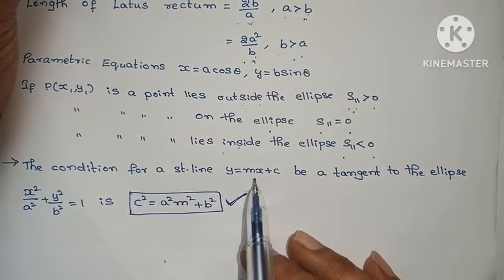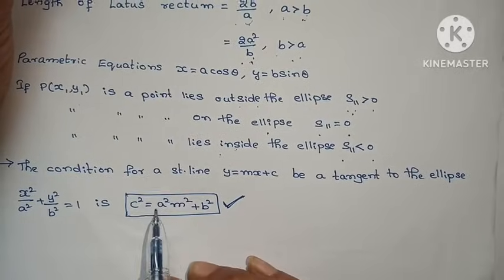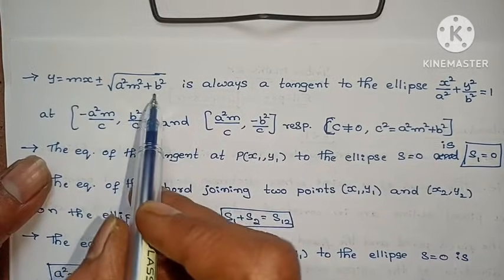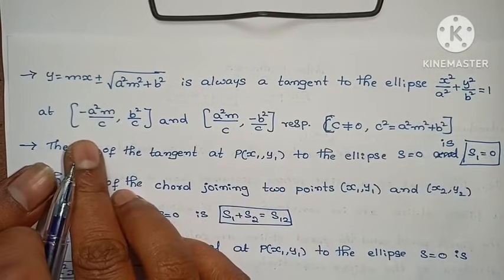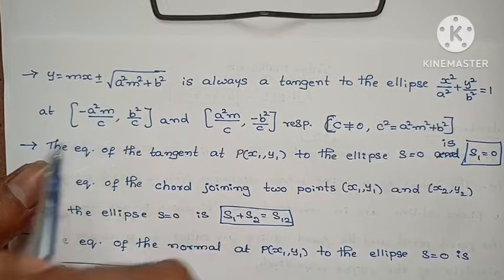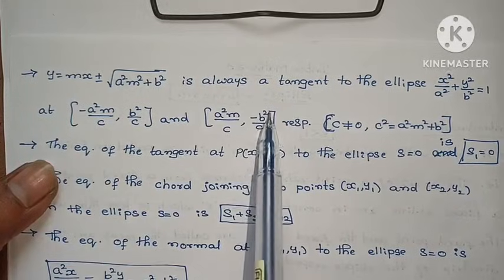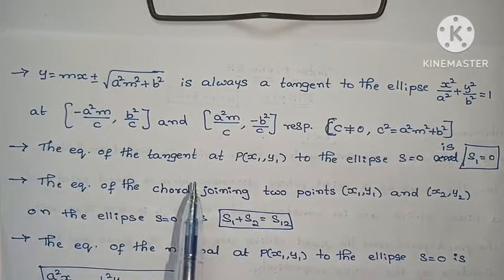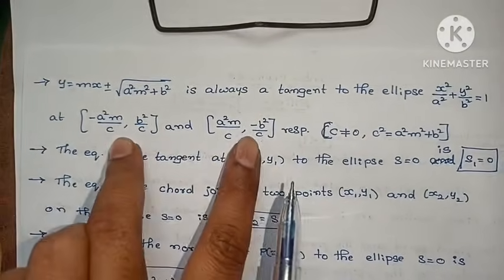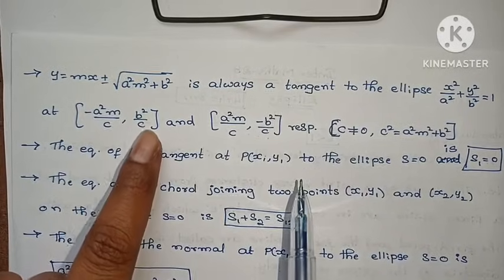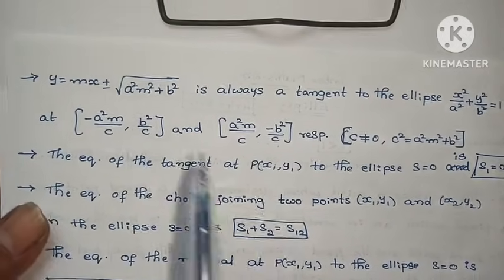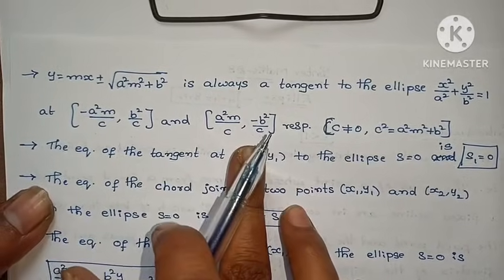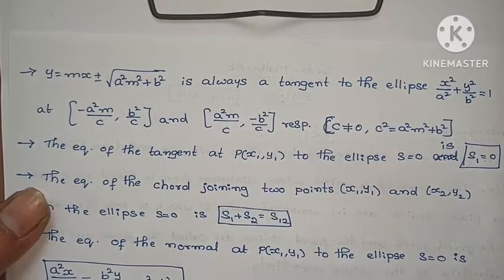So the equation of the tangent is y equals to mx plus or minus root of (a²m² plus b²), which is always a tangent to the ellipse. The tangent touches the ellipse at the point (−a²m/c, b²/c) or (a²m/c, −b²/c).